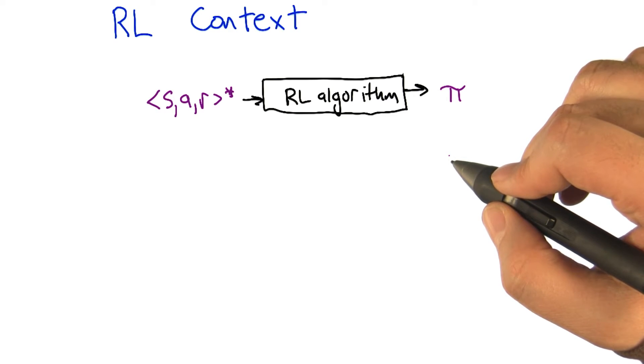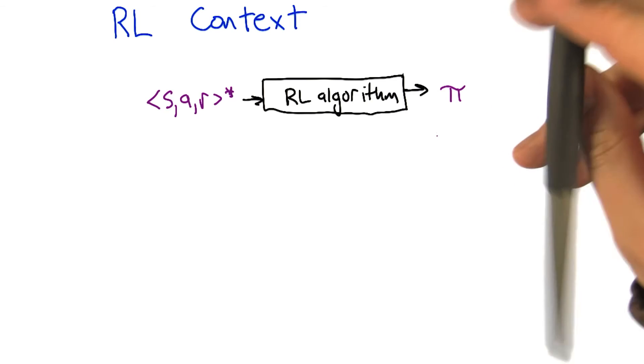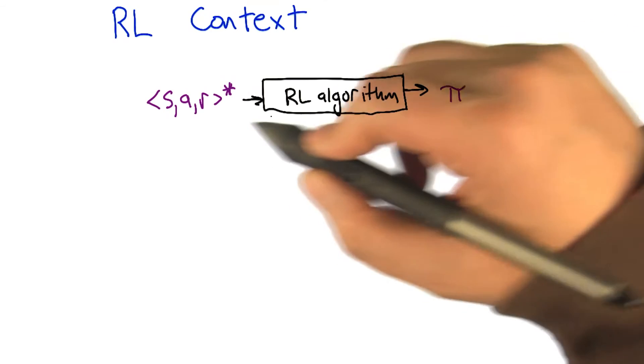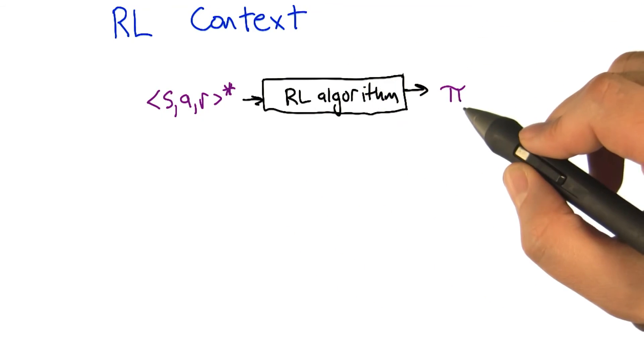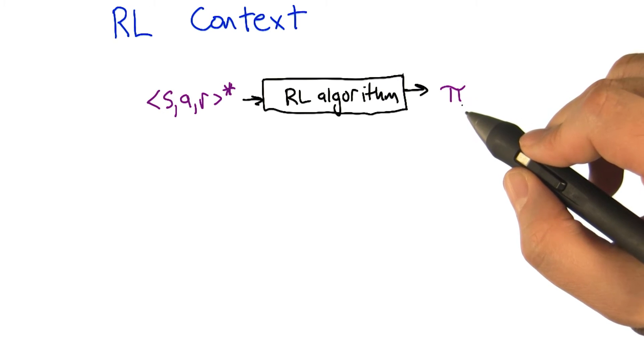I got a quick notational question for you though. Should that really be a Kleene star, or should it be a plus? Well, I'm being a little bit lax with notation here, but I'm imagining that even if you give a reinforcement learning algorithm no history at all, it could still come out with an initial policy. Sure, that makes sense.